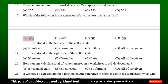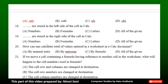Question 18: Dash are stored in the left side of the cell in CALC. Option A: Numbers. Option B: Formulas. Option C: Letters. Option D: All of the given. The correct answer is Option C — Letters. Question 19: Dash are stored in the right side of the cell in CALC. Option A: Numbers. Option B: Formulas. Option C: Letters. Option D: All of the given. The correct answer is Option A — Numbers.